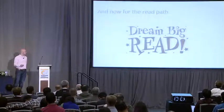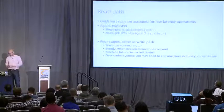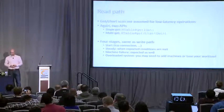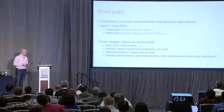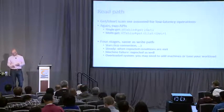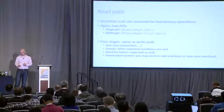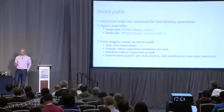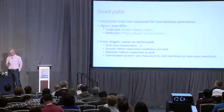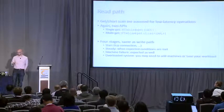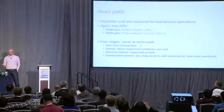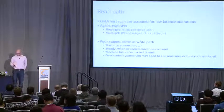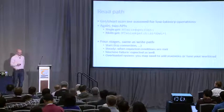Now let's talk through the read side. We're looking at small amounts of data — either a get of a single row or maybe short scans. Just like on the write side, we have two APIs to retrieve data from HBase: a single get where you make a single request, or a multi-get where a single RPC retrieves multiple pieces of data. There's no streaming read in HBase — we have to retrieve data synchronously, so we don't have that nice async API.